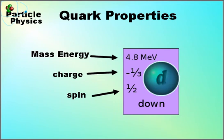The down quark has a mass energy of 4.8 MeV, which means its mass will be 4.8 MeV over c squared. It has a negative one third charge and spin of a half.